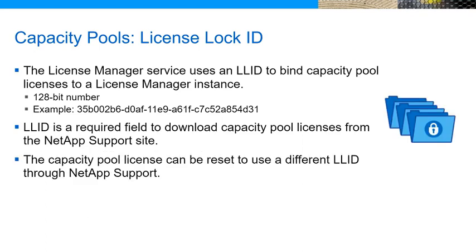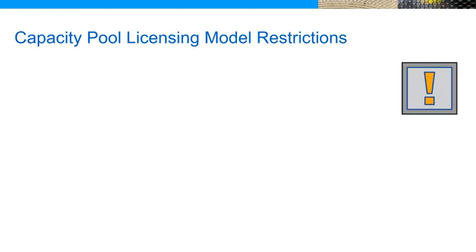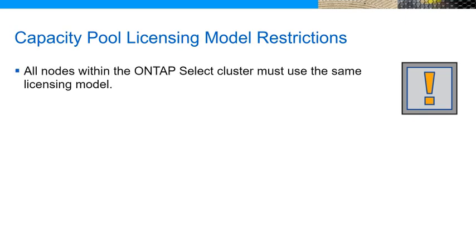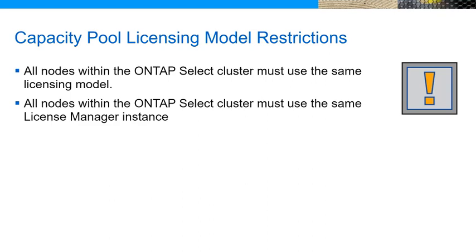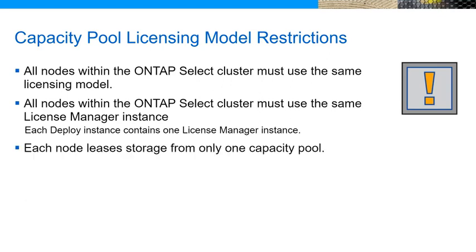An LLID is required for license download. The LLID prevents multiple license manager instances from using the same capacity pool license at the same time. However, NetApp support can reset the LLID value if a valid reason exists. Certain restrictions apply when using the capacity pool licensing model. All the nodes within a single ONTAP Select cluster must use the same licensing model, either capacity tiers or capacity pools. All the nodes with a capacity pool license in an ONTAP Select cluster must use the same license manager instance. Each deploy instance contains one instance of license manager. Each node can lease storage from one capacity pool; a node cannot use two or more pools.